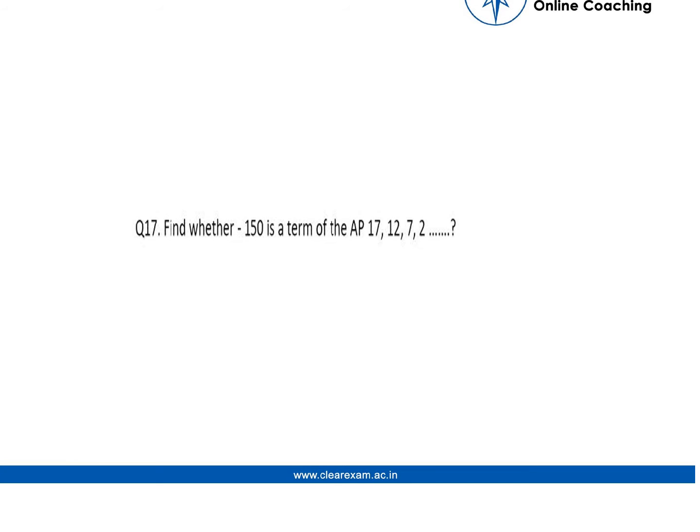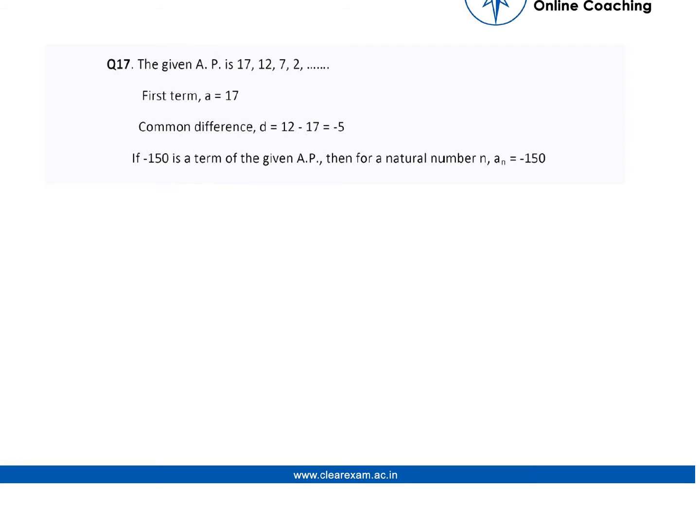Hi guys, the question is: find whether minus 150 is a term of the AP 17, 12, 7, 2. Now let's begin with the solution. First, we know that since the given question has AP 17, this will be my first term, that is a.